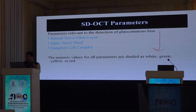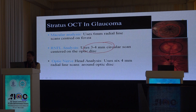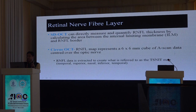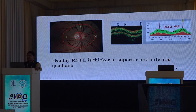You can assess all three parameters with OCT. Knowing the machine is important: the macular scan uses a 6 mm radial line or foveal scan; the RNFL scan uses a 3 to 4 mm circular scan around the disc; the optic nerve head uses a 4 mm radial line. The Cirrus gives a retinal map representing a 6.6 mm cube. A normal RNFL image shows the characteristic double-hump pattern reflected in graphical form.